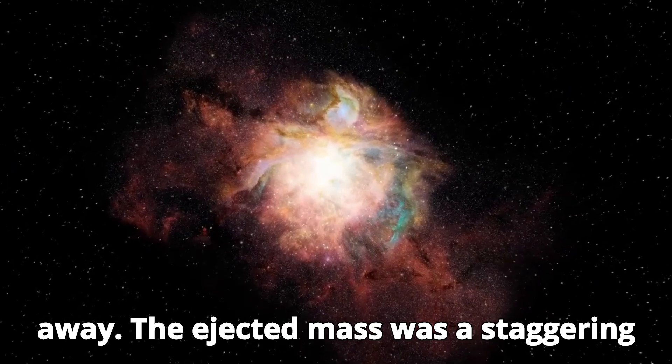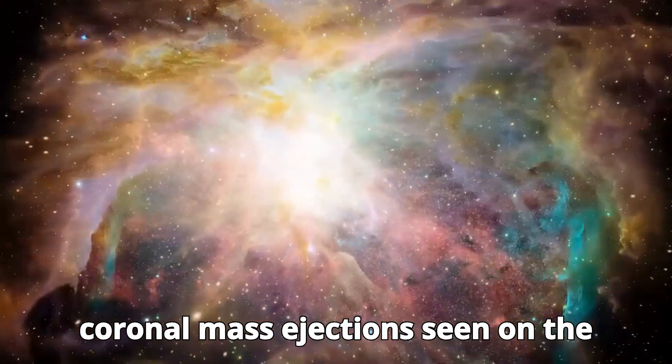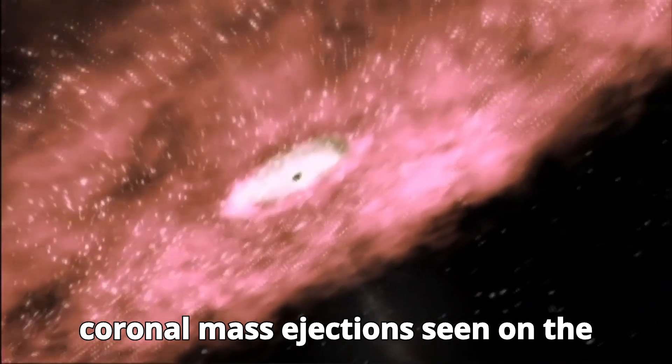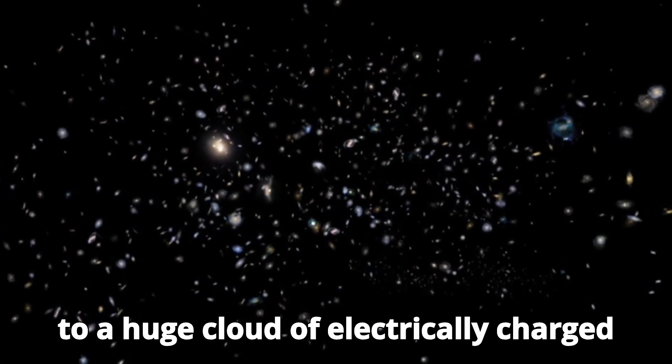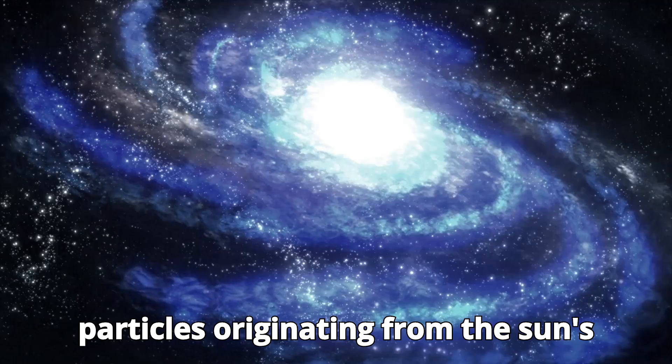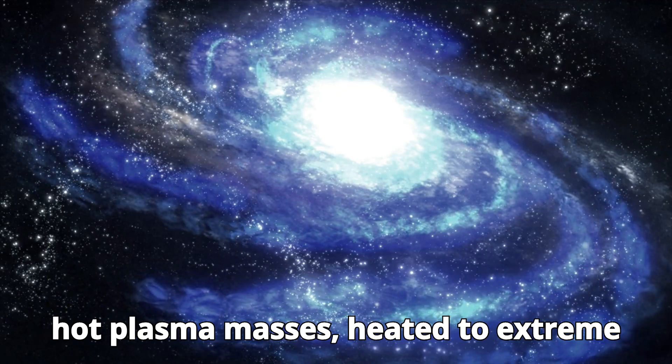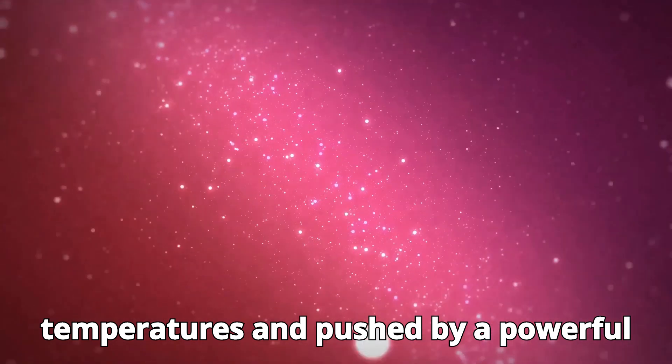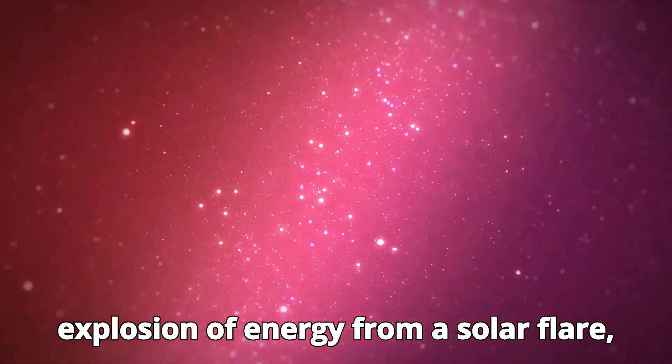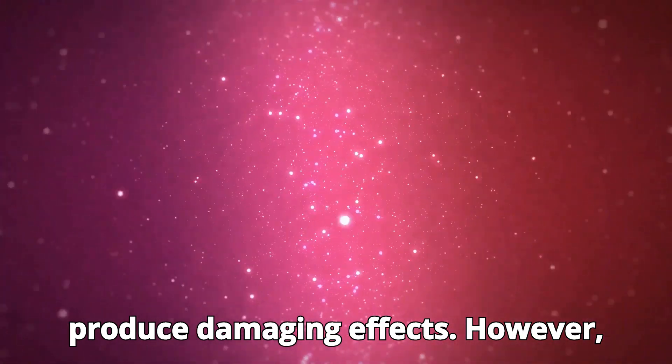The ejected mass was a staggering 400 million times larger than the typical coronal mass ejections, CMEs, seen on the sun. A CME refers to a huge cloud of electrically charged particles originating from the sun's outer atmosphere, or corona. When these hot plasma masses, heated to extreme temperatures and pushed by a powerful explosion of energy from a solar flare, encounter planets in their path, they can produce damaging effects.